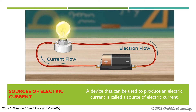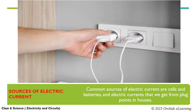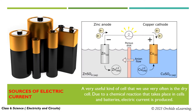Sources of Electric Current. A device that can be used to produce an electric current is called a source of electric current. Common sources of electric current are cells and batteries, and electric currents that we get from plug points in houses. A very useful kind of cell that we use very often is the dry cell. Due to a chemical reaction that takes place in cells and batteries, electric current is produced.